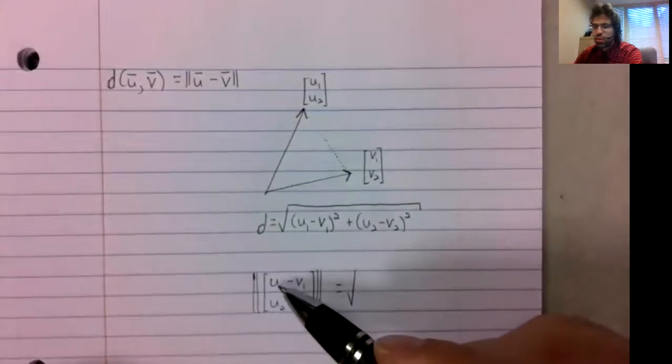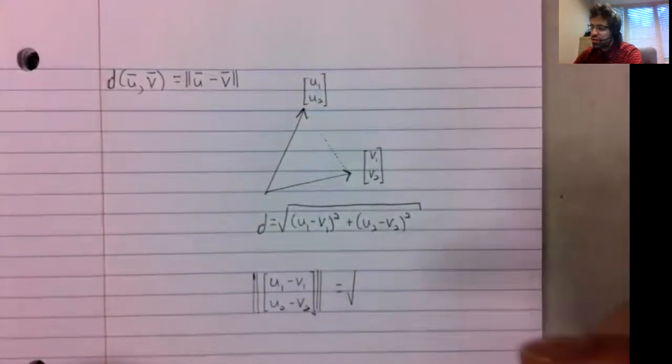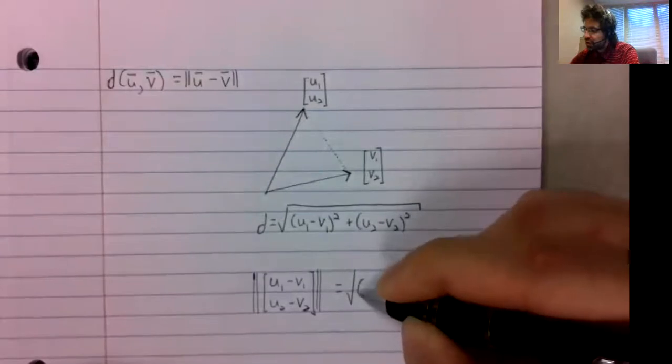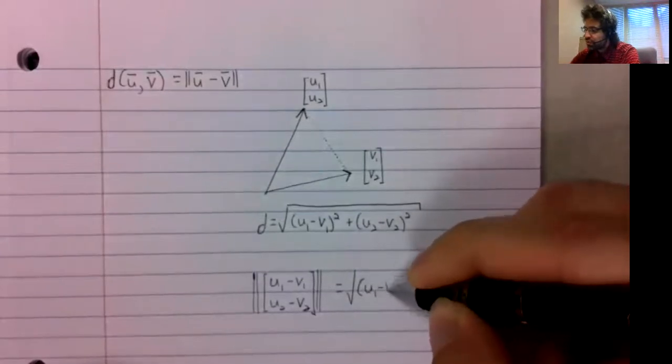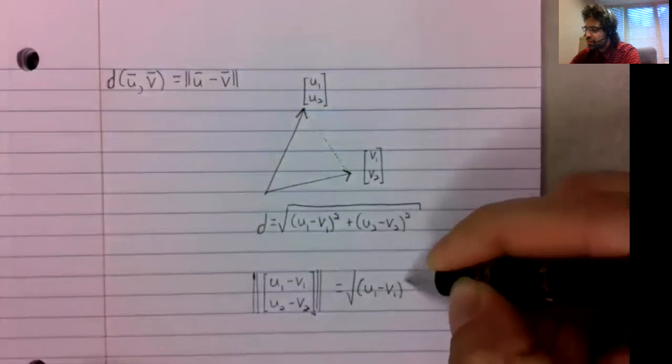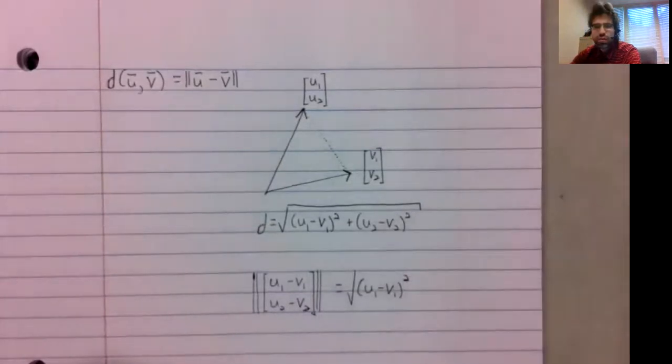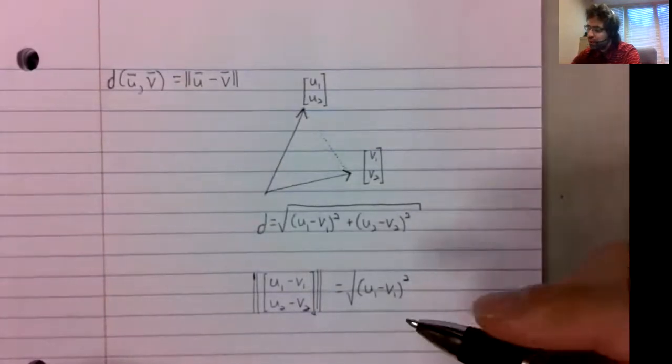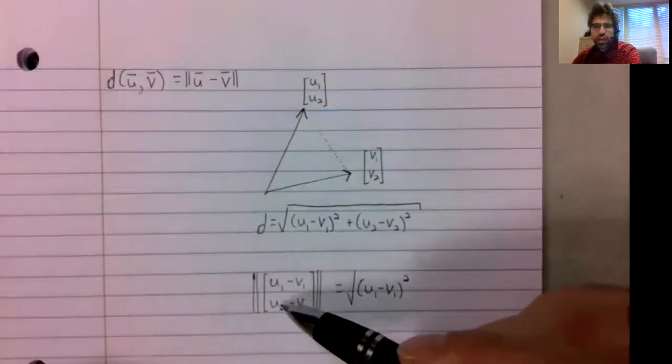So, the first element times the first element, or the first element squared, plus the second element squared.